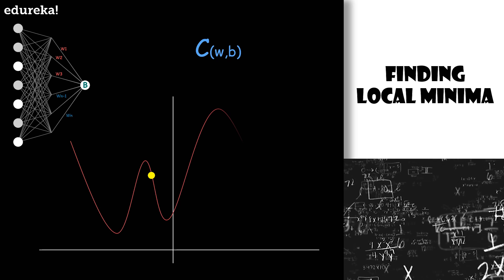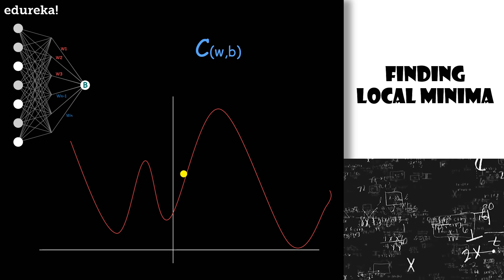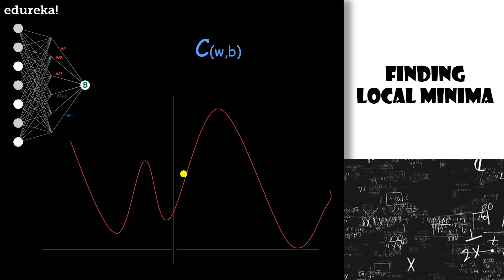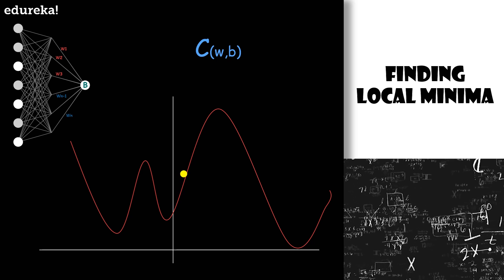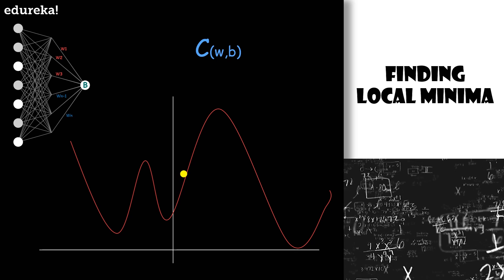So if we do this repeatedly at each point checking the next slope and taking the appropriate step, we're going to approach some local minimum of the function. But that's not always feasible for really complicated functions. Really complicated functions can have a lot of minima.